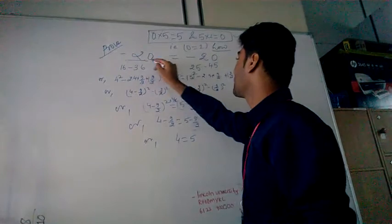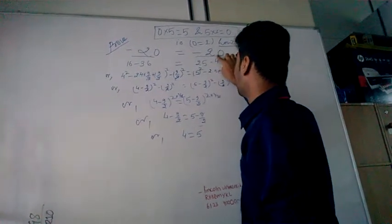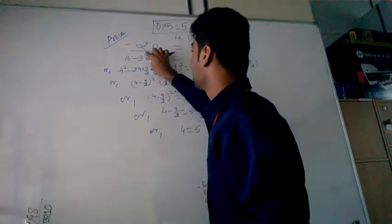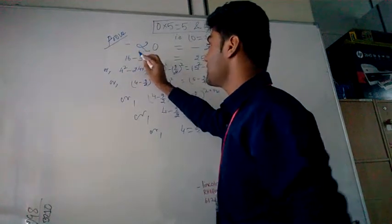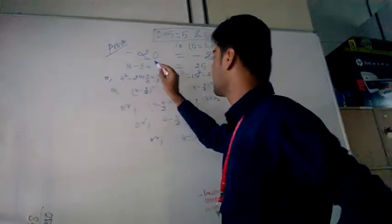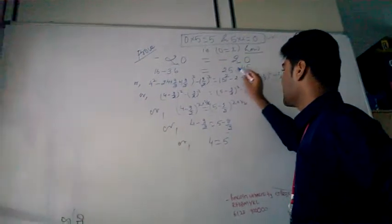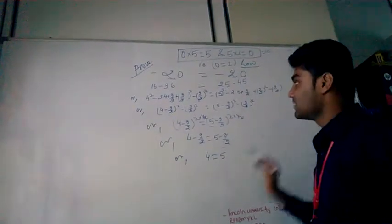Minus 20 equals to minus 20. Okay? Now, come to see. Minus 20 means you can write 16 minus 36. This side, minus 20 means 25 minus 45. Is this okay? Right? Yes.